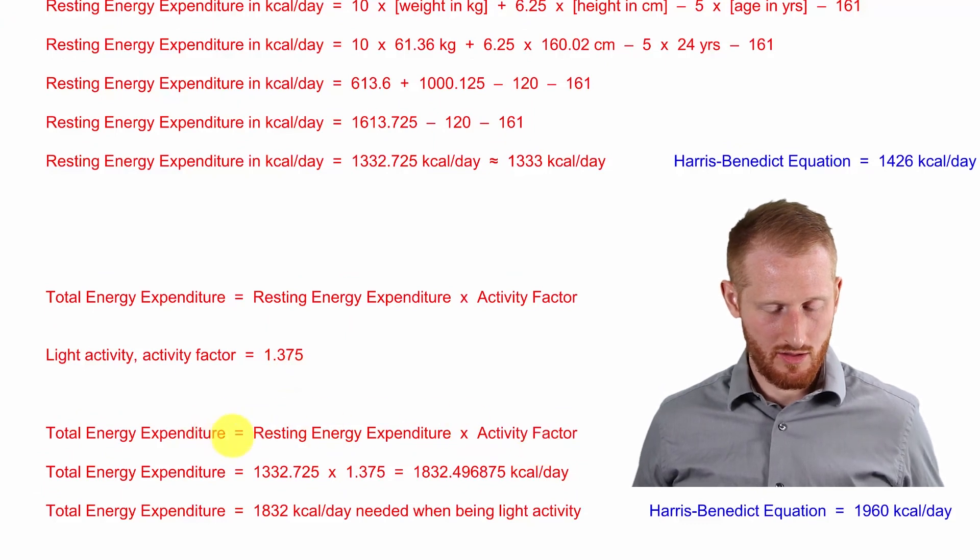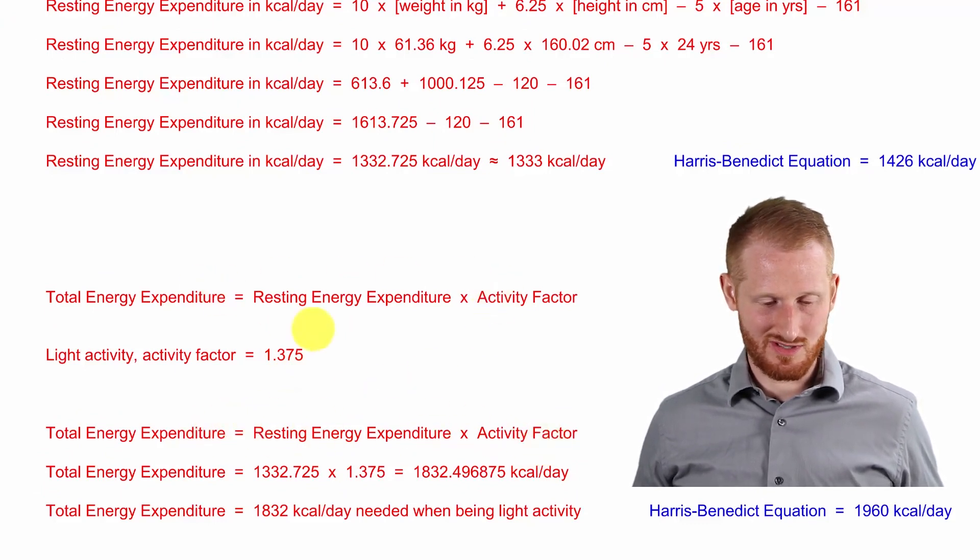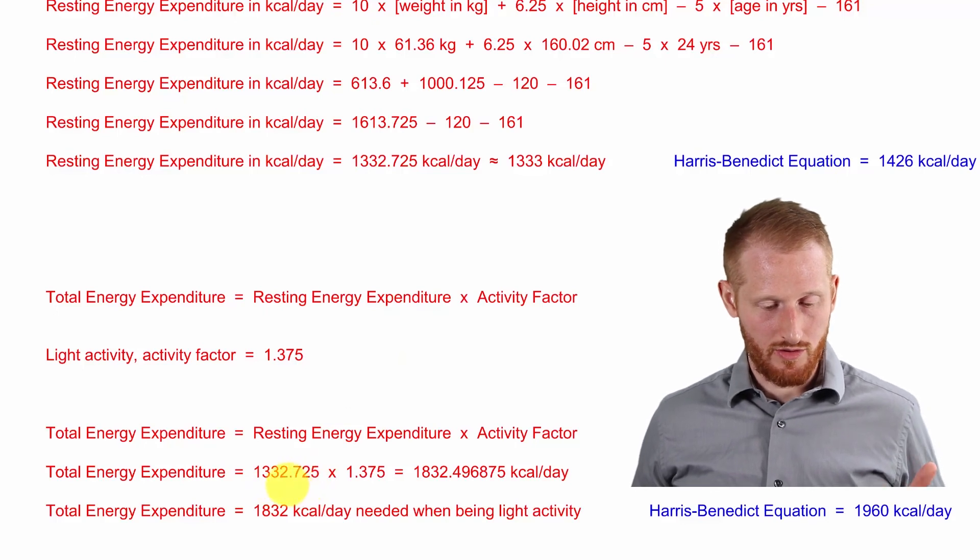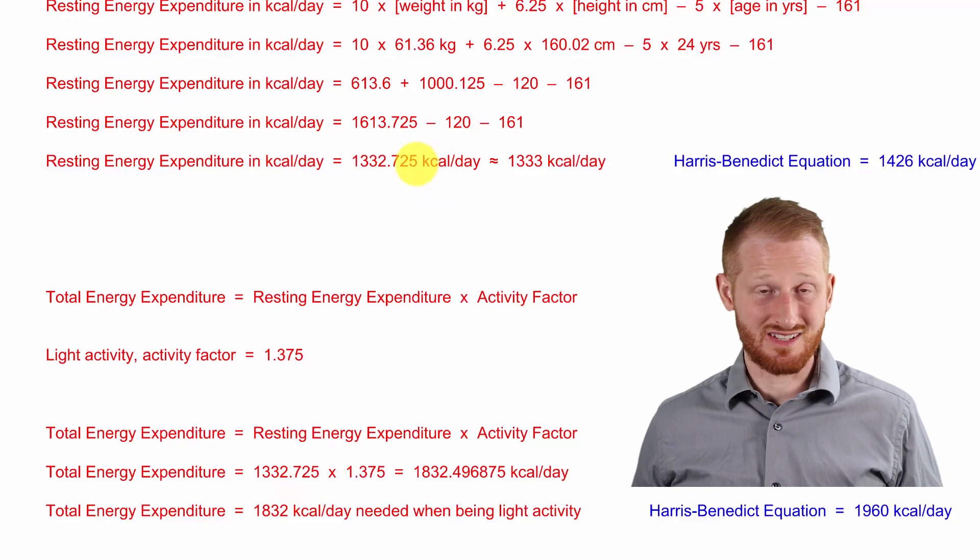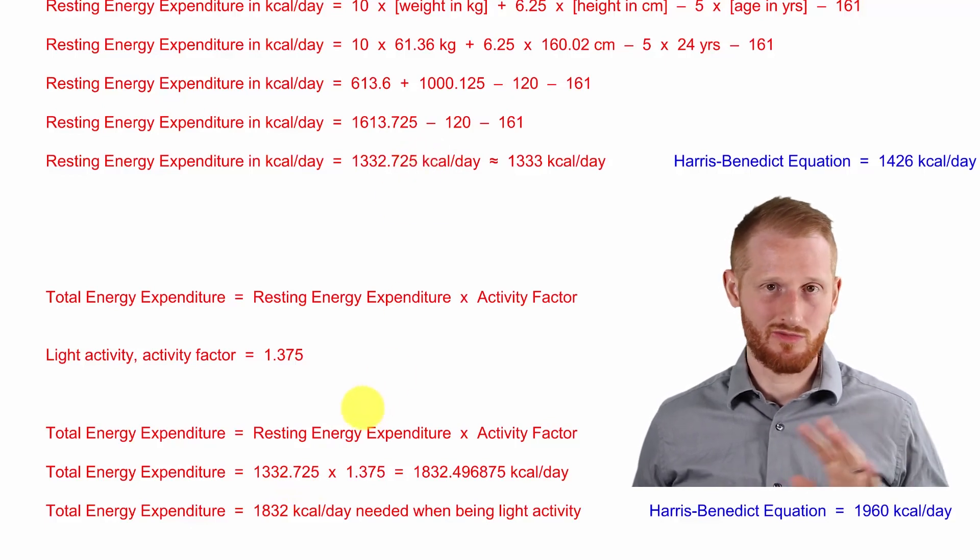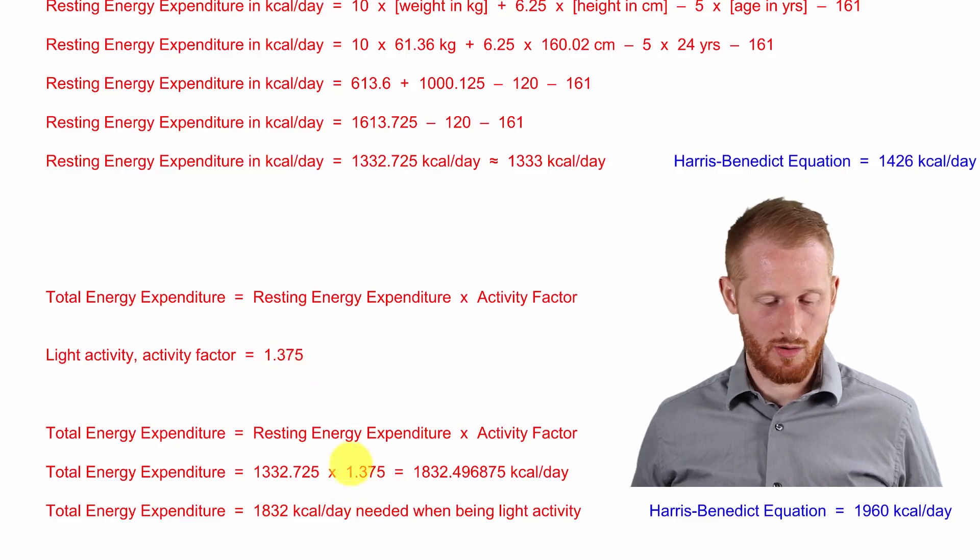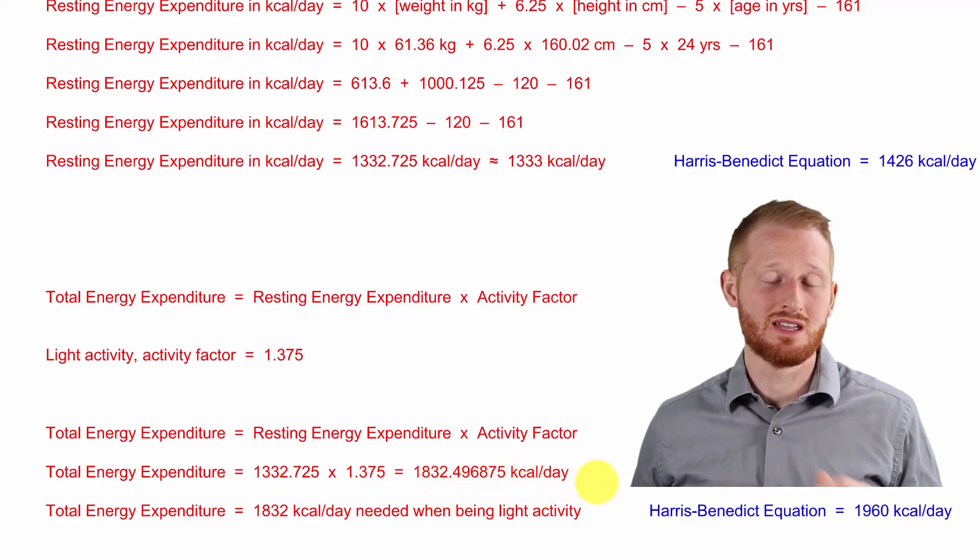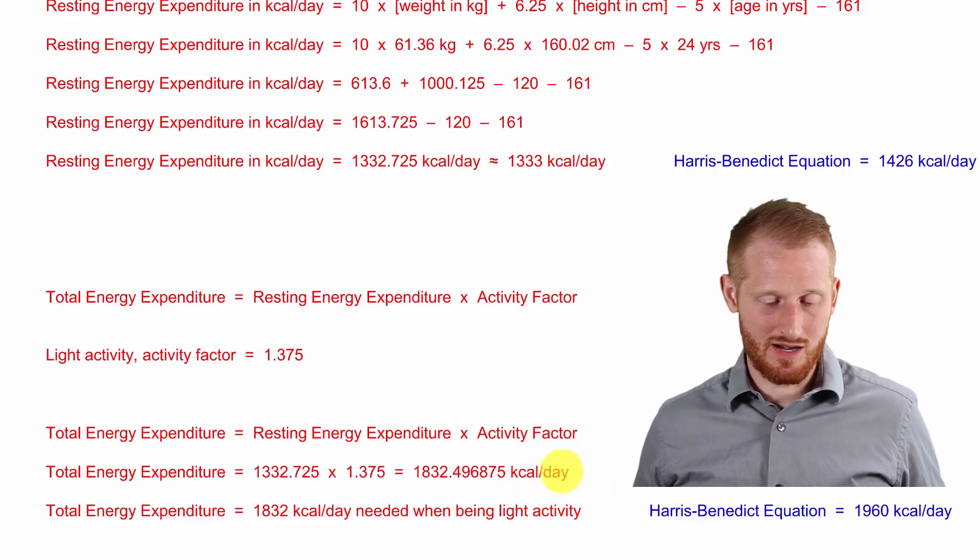So plugging those values into this equation, which is just the same as up here, copy and pasted, we get the 1,332.725 kilocalories per day, which was the resting energy expenditure, keeping all the decimal places. Multiply that by the activity factor of the 1.375 gives us 1,832.49 and a bunch of decimal places for kcals per day needed in order to maintain body mass.